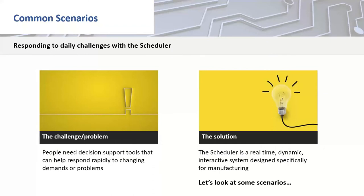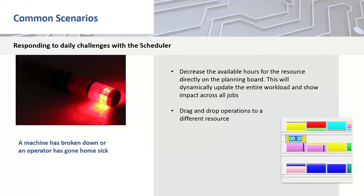We're now going to move into some scenarios — things that will hopefully touch a nerve for those in a planning role. John will play the operations manager or managing director, and Neil will be the planner scheduler. The assumption is that the planner scheduler is expected to solve every problem and still get the work out on time.